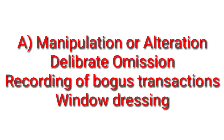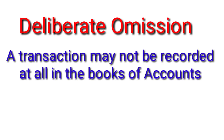The first sub-type under manipulation is deliberate omission. The second is recording of bogus transactions. The third is a very important concept which often appears as a short-note question in auditing papers, called window dressing. So manipulation and alterations involve these three things: deliberate omission, bogus transactions, and window dressing.